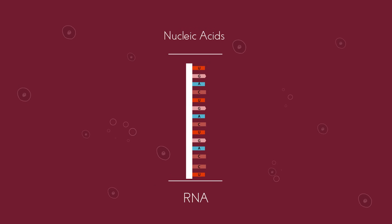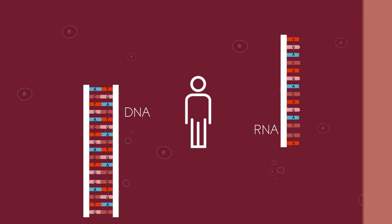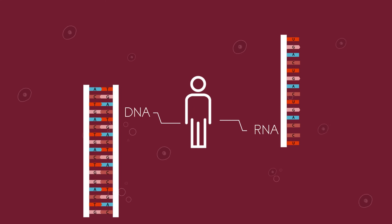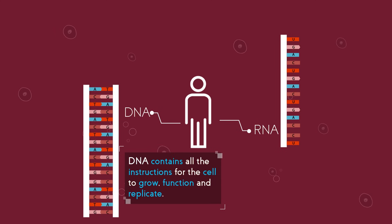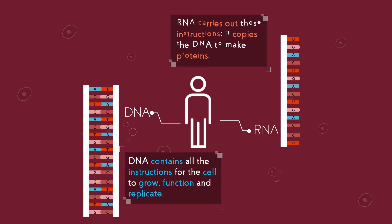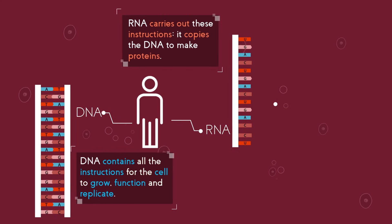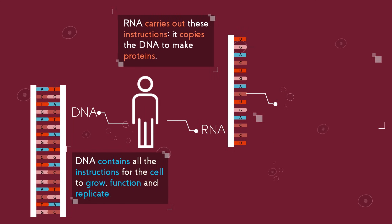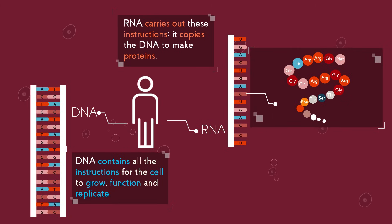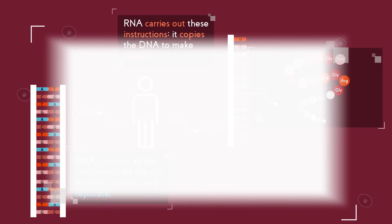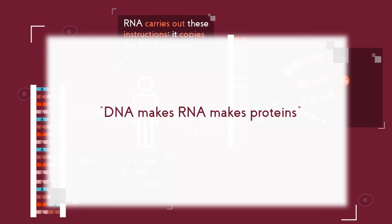We have both DNA and RNA in our bodies, and we need them both. DNA is the blueprint — it contains all of the instructions for the cell to grow, function and replicate. The RNA carries out these instructions; it copies and transfers the genetic code from the DNA to ensure the relevant proteins are made. So just think of it as: DNA makes RNA makes proteins.